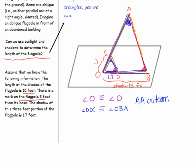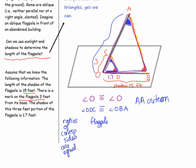Now that we know they're similar, we can use the ratios of corresponding sides to find the missing length of the flagpole. We know that the ratios of corresponding sides are equal. So we have the length of the flagpole — segment OA — over the three-foot section — segment OC — as our dilated over original.